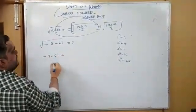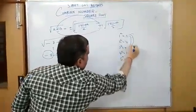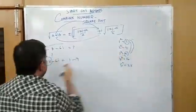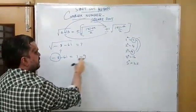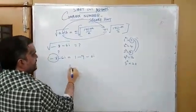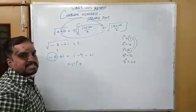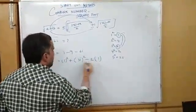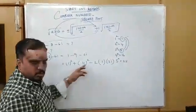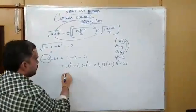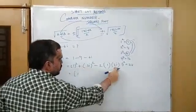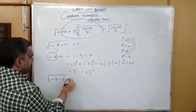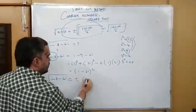After that, we write minus 8 minus 6i. We need minus 8, so we take 9 and 1, because 1 minus 9 equals minus 8. We write: 1 squared minus (3i) whole squared, then write minus 6i in the form of 2ab, which is 2 into 1 into 3i. This is the form of (a minus b) whole squared, which gives a squared minus b squared minus 2ab. So we get (1 minus 3i) whole squared. Taking square root, we get plus or minus (1 minus 3i). Square and square root cancel.